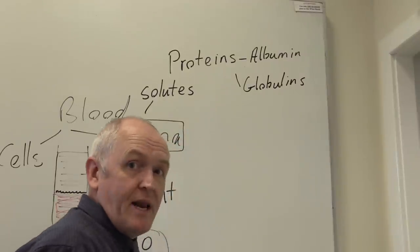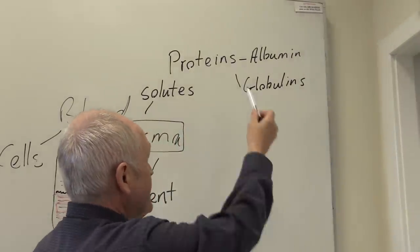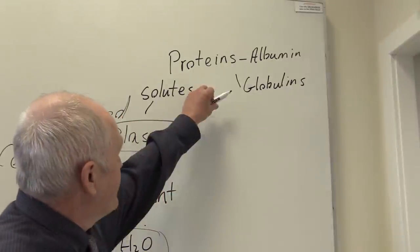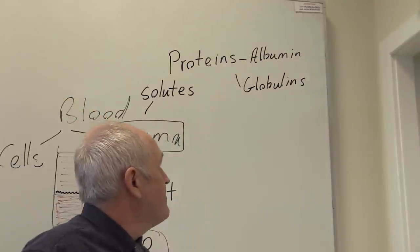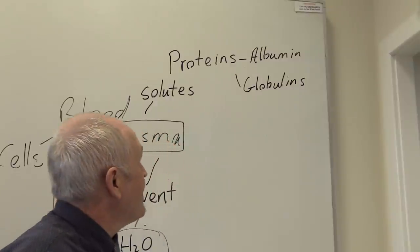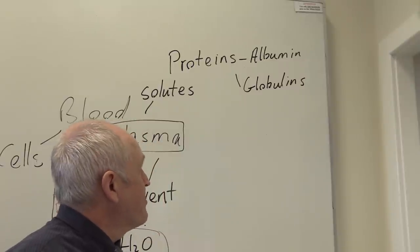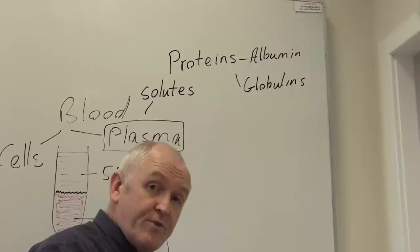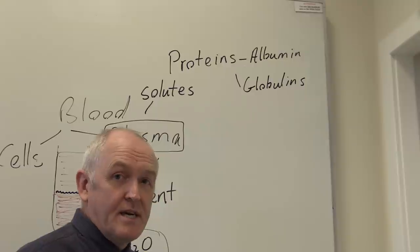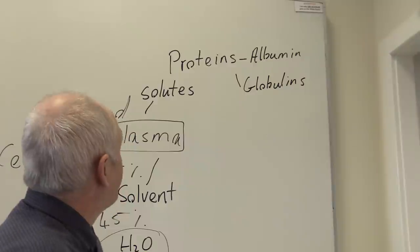Albumin generates a lot of this osmotic suction potential in the plasma, which is very important for the reabsorption of tissue fluids at the venous end of the capillary and to prevent edema. If someone doesn't have enough albumin, they can become edematous. There are also globulins — proteins that are globular in nature. Like albumin, some globulins are made in the liver.